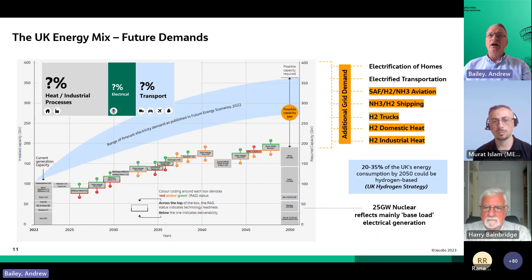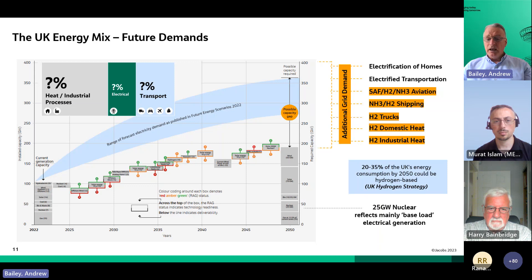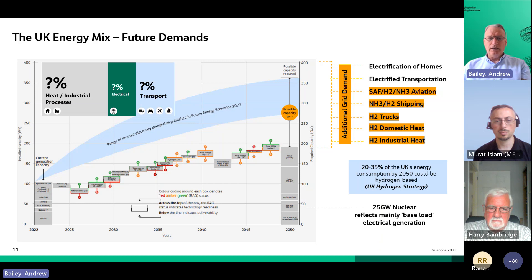Going back to Harry's introduction, small modular reactors can play a part here because if they are small enough and modular, they can be put closer to the sources of heat and electricity they need to serve. And if they are truly modular, they can be assembled and installed much more quickly. The reduced time and cost to install has a massive impact on the cost of electricity, and it means that flexibility is increased.